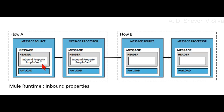A message retains its inbound properties only for the duration of the flow. When the message passes out of the flow, its inbound properties do not follow.